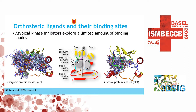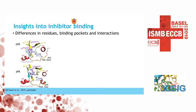We start with the orthosteric ligands and their binding sites. Here is an overview of all orthosteric ligands currently solved in 3D structures of eukaryotic protein kinases — they target both the front and back pockets, the gate area, and even some cryptic pockets. The atypical ligands target much less of an area; there is currently not a single atypical ligand that targets the back pockets. However, they do target some pockets behind the G-rich loop that are really selective for the atypical kinases and don't occur in the eukaryotic kinases.